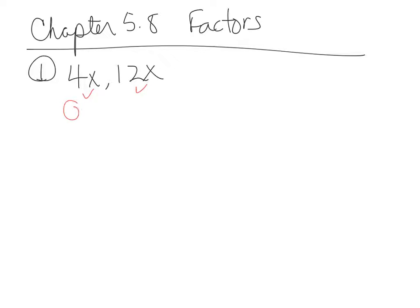And they want to know what the greatest common factor is. So what goes into 4x and 12x? What do they have in common? I can get a factor of 4 out of both of them, because I can take a 4 out of 4 and get 1, and I can take a 4 out of 12 and get 3. But I can also take an x out of both, because there's an x in each term. So the greatest common factor is 4x.